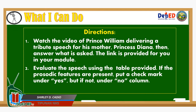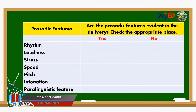Now that you are done with task 5, let's proceed to task 6. Listen carefully to the directions. Watch the video of Prince William delivering a tribute speech for his mother, Princess Diana, then answer what is asked. The link is provided in your module. When you are done watching, evaluate the speech using the following table. If the prosodic features are present, put a checkmark under 'yes,' but if not, put a checkmark under 'no.' For example, if features such as gesture, body language, or posture are observed, put a checkmark under 'yes'; if none are observed, put a checkmark under 'no.'